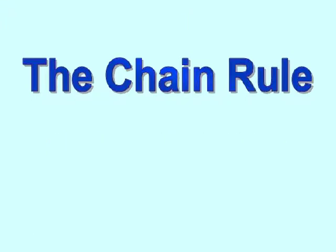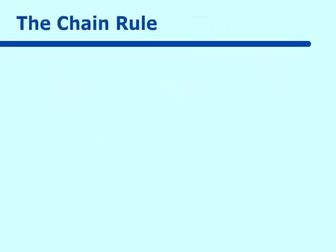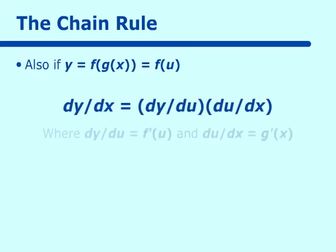We can write this in another way. If y equals f of g of x, and u equals g of x, then dy/dx equals dy/du times du/dx. Here dy/du equals f prime of u, and du/dx equals g prime of x. So what we want to do is kind of peel an onion — that will be how we use the chain rule, peeling away at our functions.